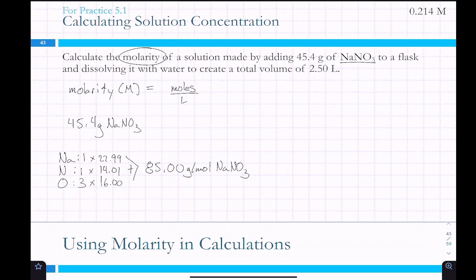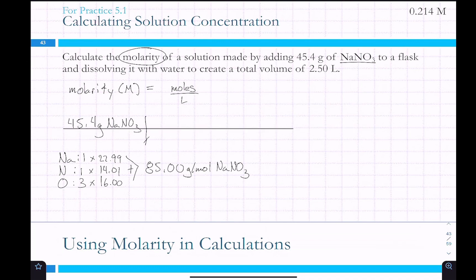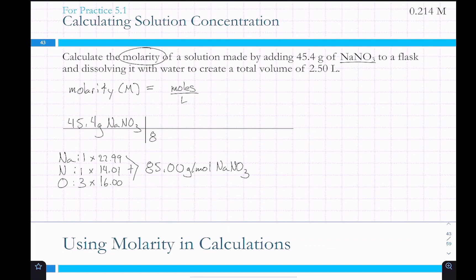22.99 plus 14.01 plus 3 times 16 — that's 85 exactly. So the molar mass is 85.00 grams per mole NaNO3. The molar mass is the mass of one mole, and we can use this to convert.